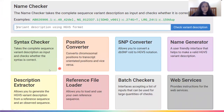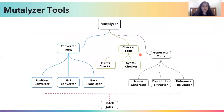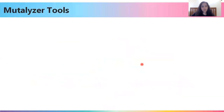Each box on the homepage is a single tool with a clickable interface. All tools are broadly classified into three main categories. The first is converter tools, which help us interconvert between different kinds of HGVS nomenclature. The second is checker tools, which help us check whether the syntax and the variant itself are correct. Third is generator tools, which help us generate variant descriptions in different input formats. Several of these tools can be utilized via batch jobs, which help us process several variants in the same go.